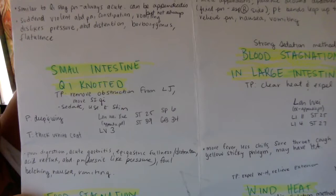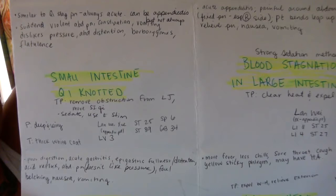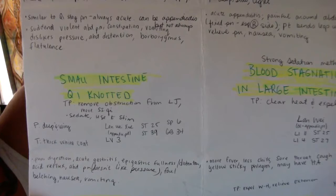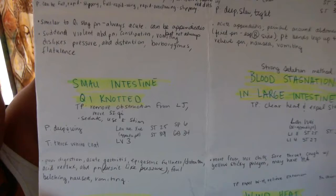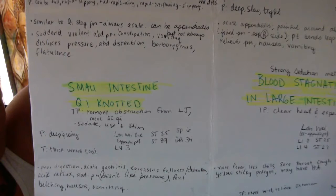Small intestine chi knotted, similar to chi stagnation pain, always acute, can be appendicitis. Sudden violent abdominal pain, constipation, vomiting, dislikes pressure, abdominal distension, borborygmus, flatulence.